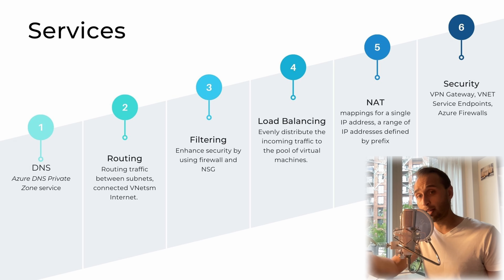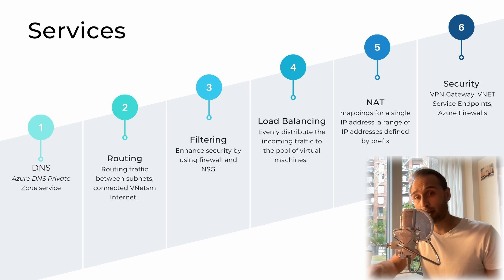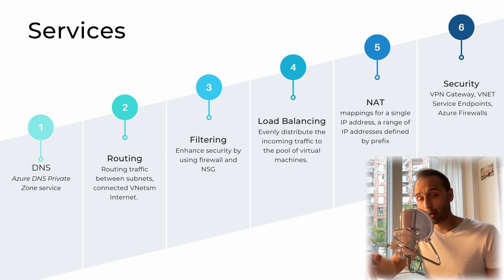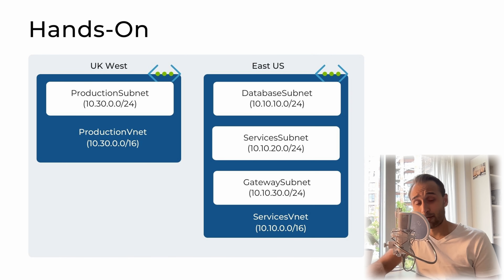I have also listed six types of exemplary services we can attach to our VNets. Starting with DNS — using services like Azure DNS private zones, we can enable name translation. For routing, we can use the BGP protocol to enable traffic routing between different subnets and VNets. Filtering is handled with network security groups and firewall. Load balancing helps us evenly distribute incoming traffic to a pool of virtual machines in our VNets. We also have network address translation and various security appliances such as VPN or web application firewall and network security groups.